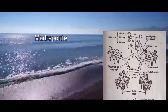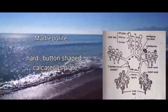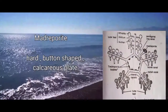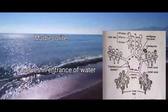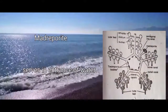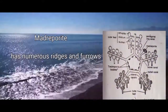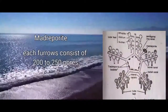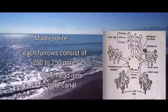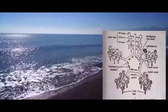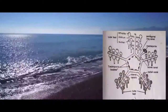The madriporite is a hard button-shaped calcareous plate made up of calcium carbonate. It works as the entrance of sea water into the water vascular system. The madriporite has numerous ridges and furrows; each furrow consists of about 200 to 250 pores which lead into a pore canal. The pore canals join to form a common canal which opens into an ampulla beneath the madriporite.